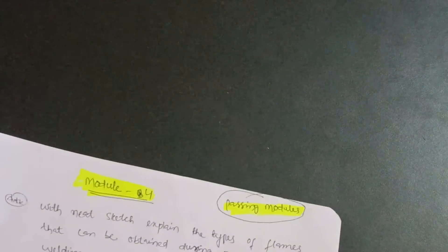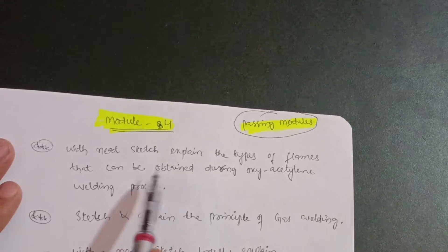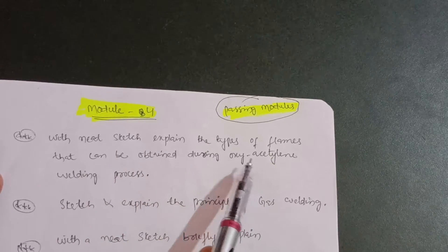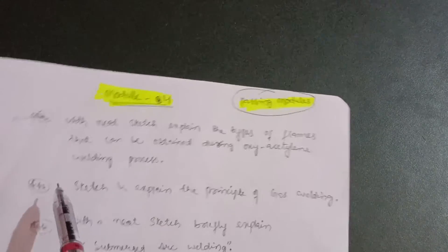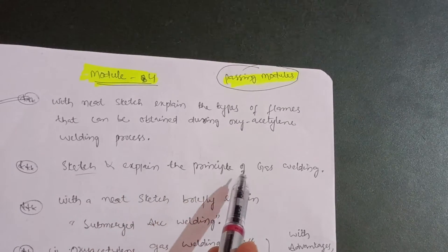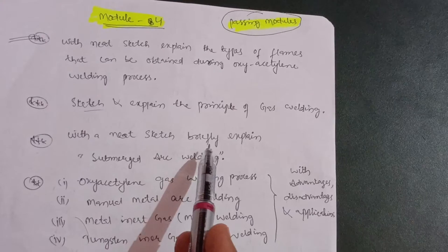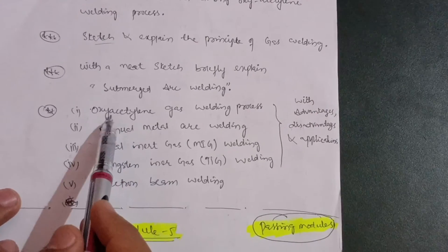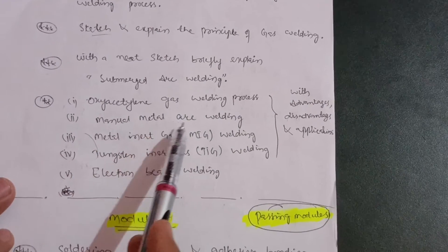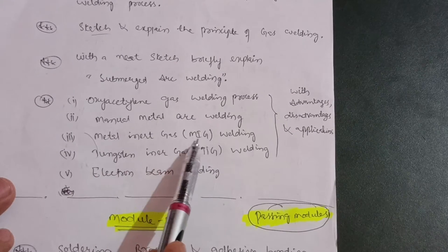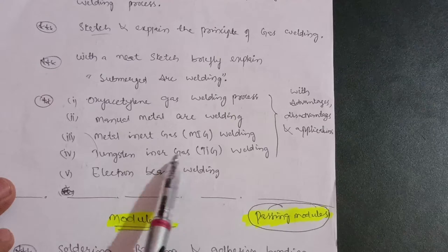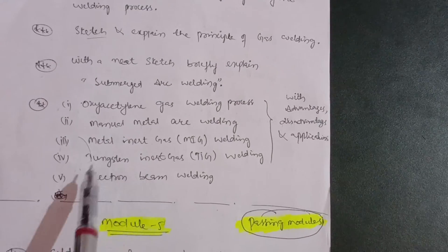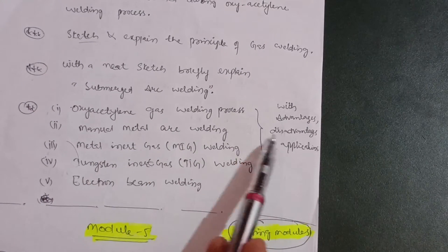The next passing module is Module 4. Cover: types of flames in oxy-acetylene welding with a neat sketch — the most important question. Next: sketch and explain the principle of gas welding. Then: submerged arc welding with a neat sketch. Also cover oxy-acetylene gas welding, manual metal arc welding, MIG welding (Metal Inert Gas), TIG welding (Tungsten Inert Gas), and electron beam welding. Remember their advantages, disadvantages, and applications.